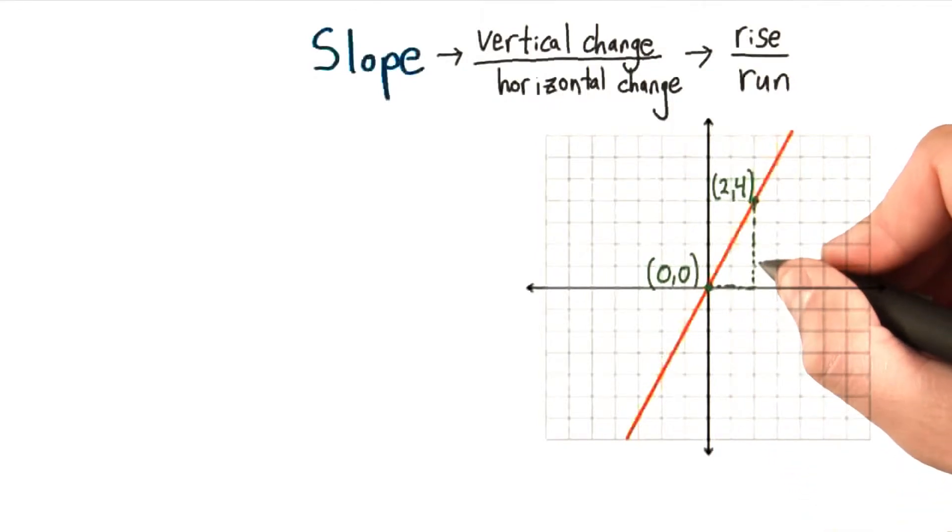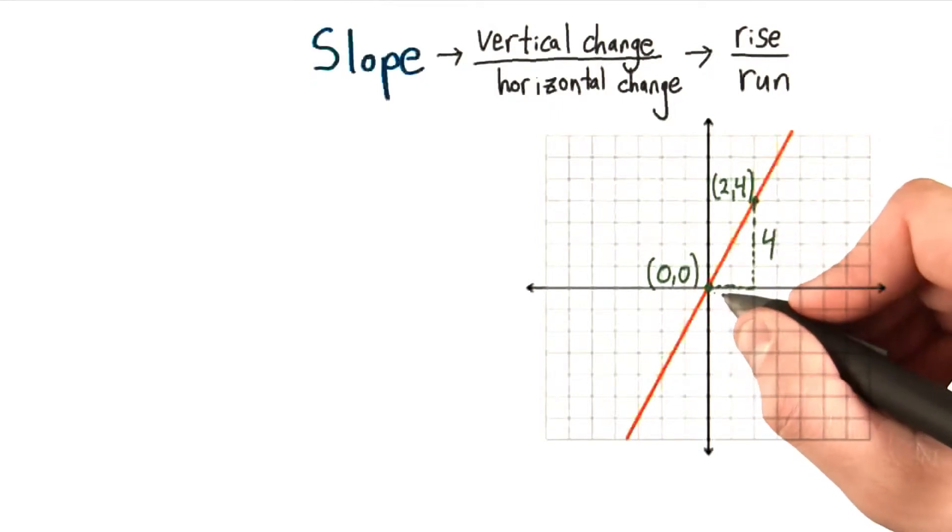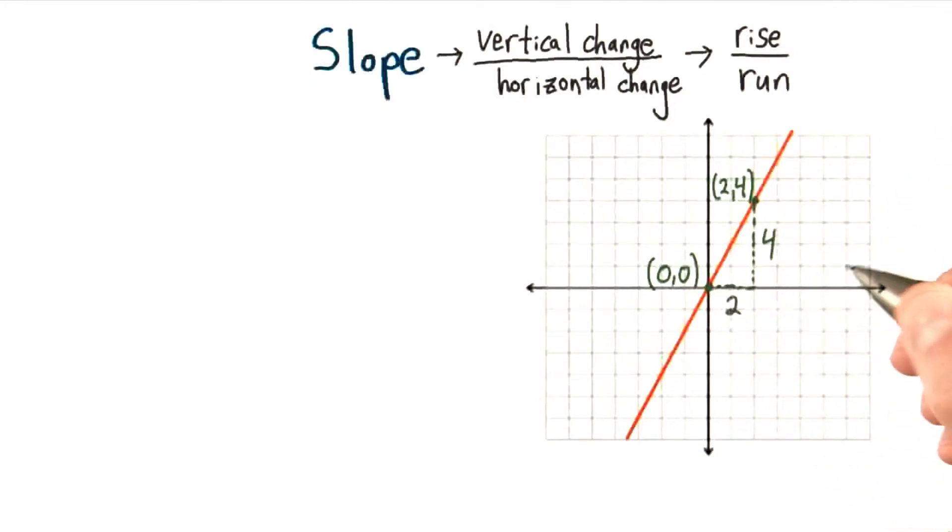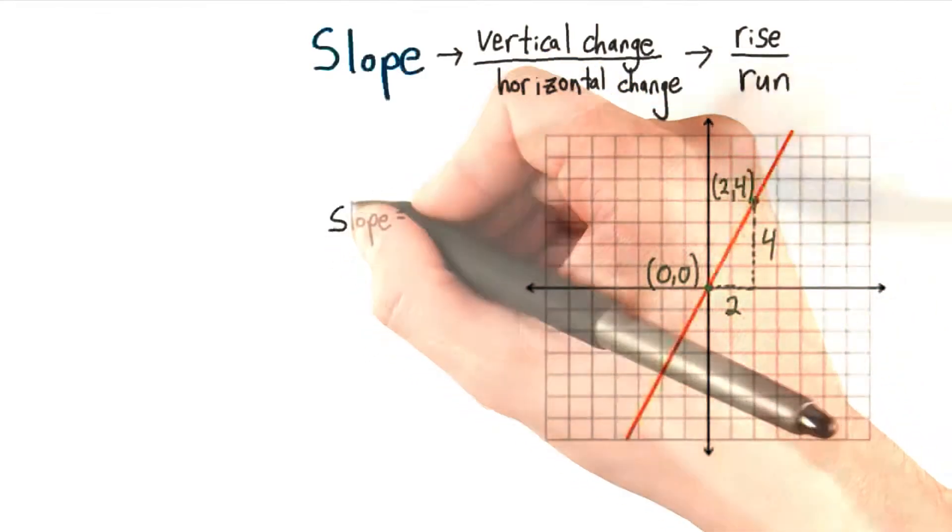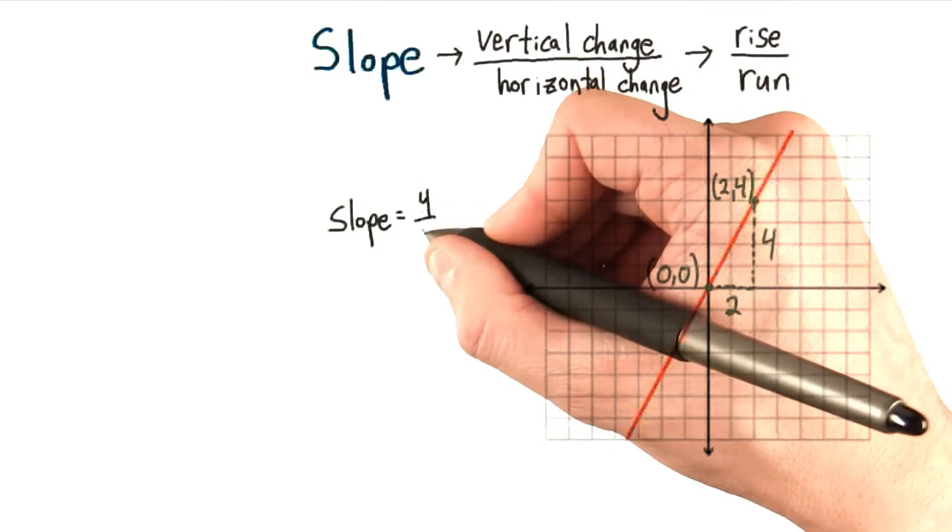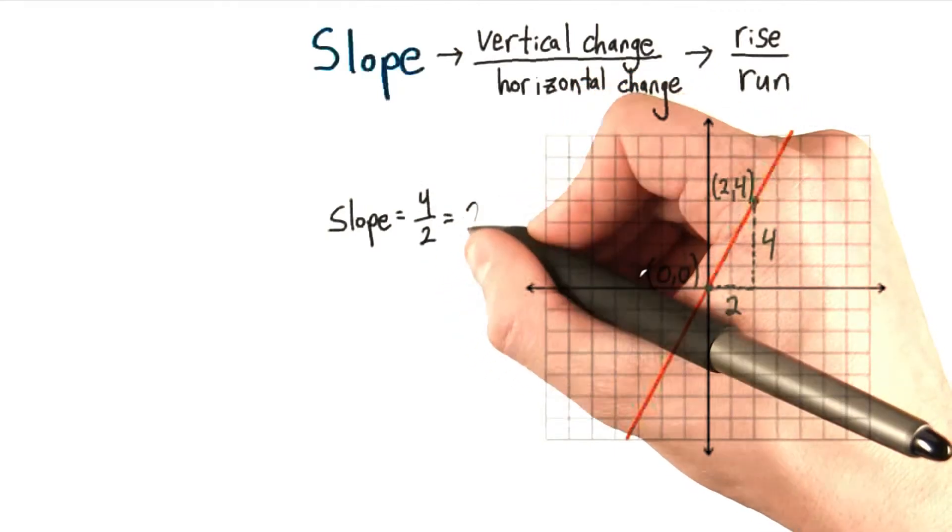And I can tell it goes up 1, 2, 3, 4, and it goes over 1, 2. 4 and 2. So the slope of this line is equal to the rise over the run, which in this case is 4 over 2, or just 2.